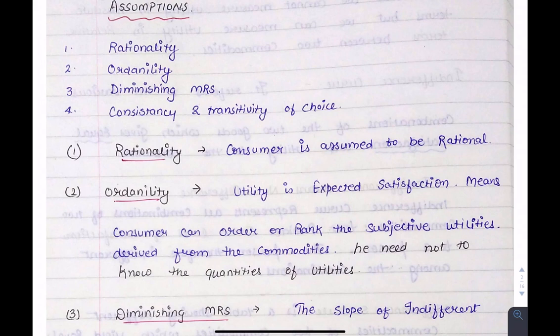Next are the assumptions. Rationality means that the consumer has a rational mind and all decisions will be rationally taken. Ordinality means order — we can rank goods in order, but we cannot measure utility numerically.